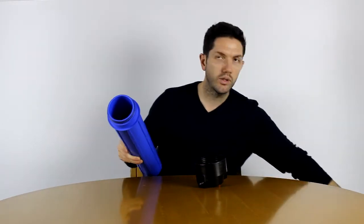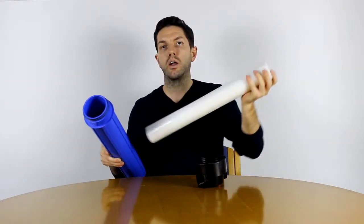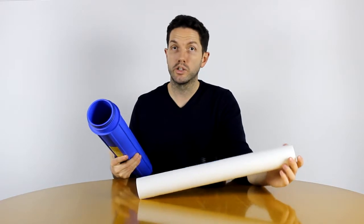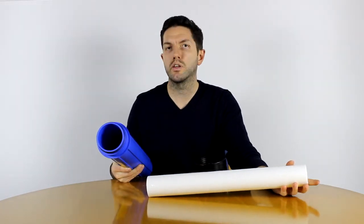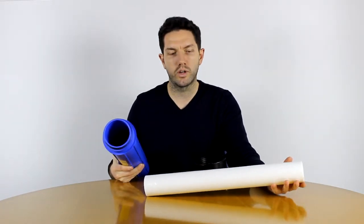Secondly, these housings take a 2.5-inch by 20-inch filter, which is easily available in a variety of types: sediment, GAC, carbon block, ultra filters, and more.